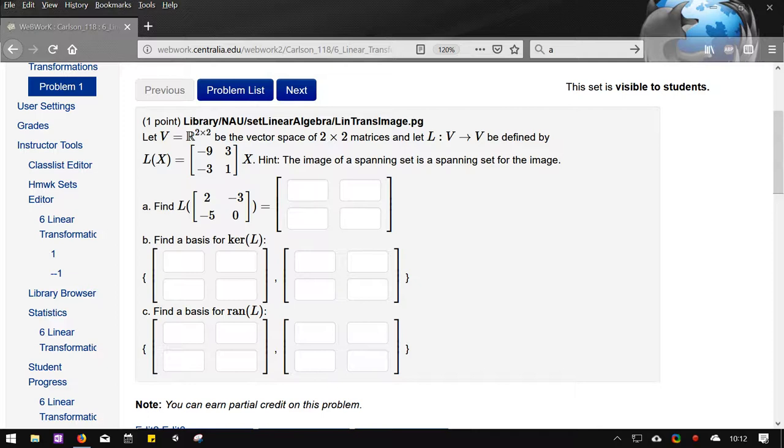They're telling us the vector space is the set of 2×2 matrices, so that's a little bit strange. We'll worry about that in a minute.